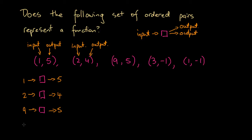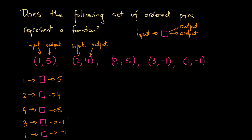Let's consider (3, -1): 3 is the input, and this set of ordered pairs says the output is -1. Again, a single input and a single output — looking good. Now let's consider the last one: (1, -1). If we input 1, this statement says we should get -1 as output. Notably, both 3 and 1 map to -1, but that's fine in itself — two different inputs can share the same output and it can still be a function.